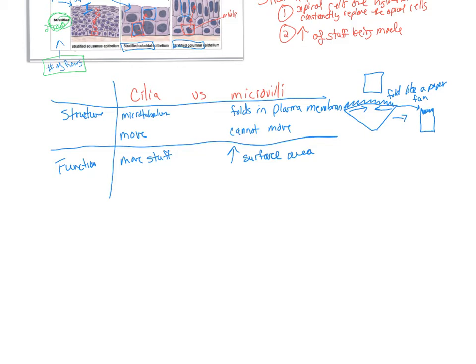The reason I'm bringing this up is because we're going to start talking about simple types of epithelium, and sometimes we include the word 'ciliated' — for example, ciliated simple columnar epithelium. Not all simple columnar epitheliums are ciliated; sometimes they are. So you need to be aware of that.